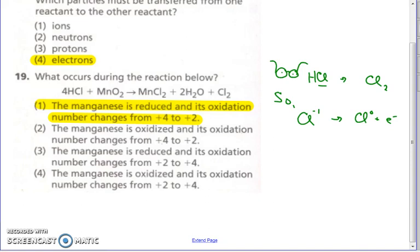Start looking at the other things. Well, oxygen — is it over there? So that's not changing. We already decided about chlorine. So the other element is hydrogen — hydrogen is plus one here, plus one there. That leaves us manganese. This time manganese is with an oxygen; this time manganese is with two chlorines. Oxygen is a negative two, chlorine is a negative one — that tells you what's going on.